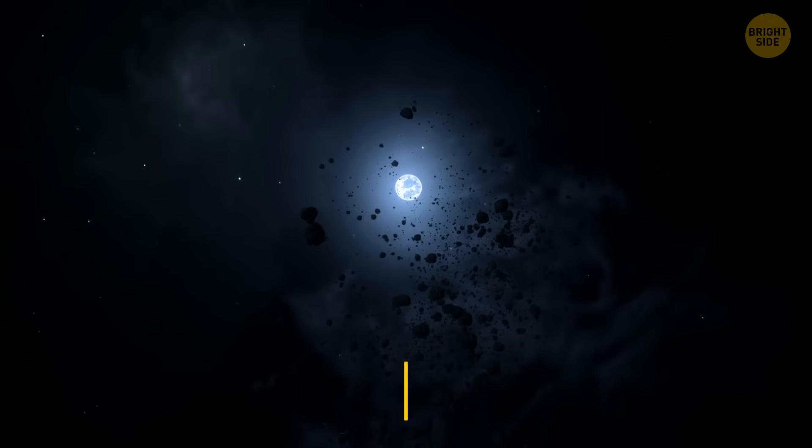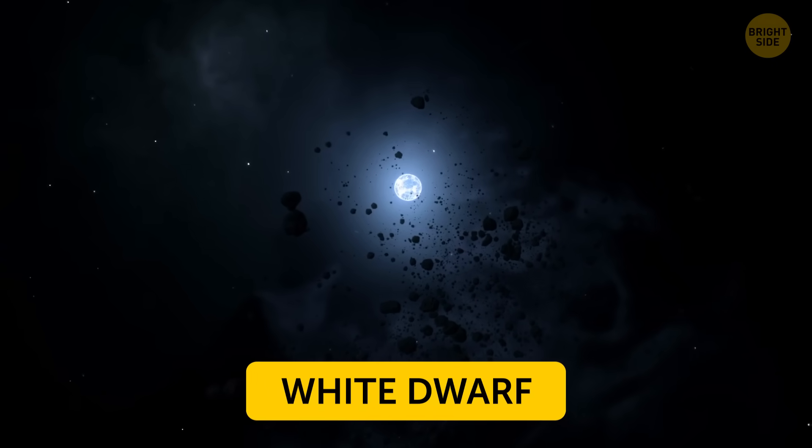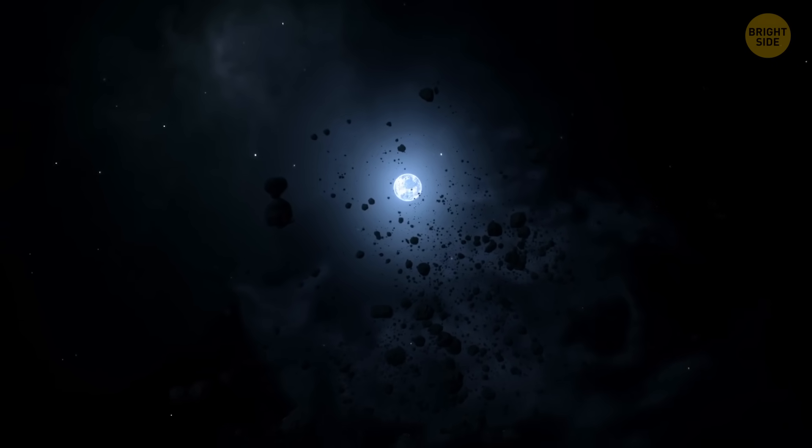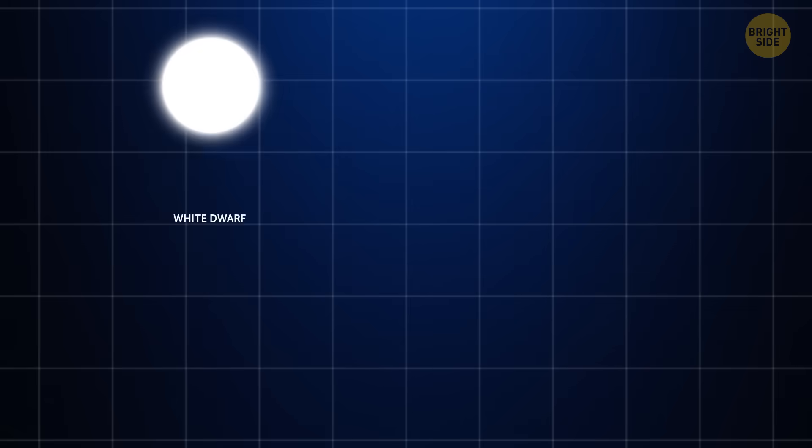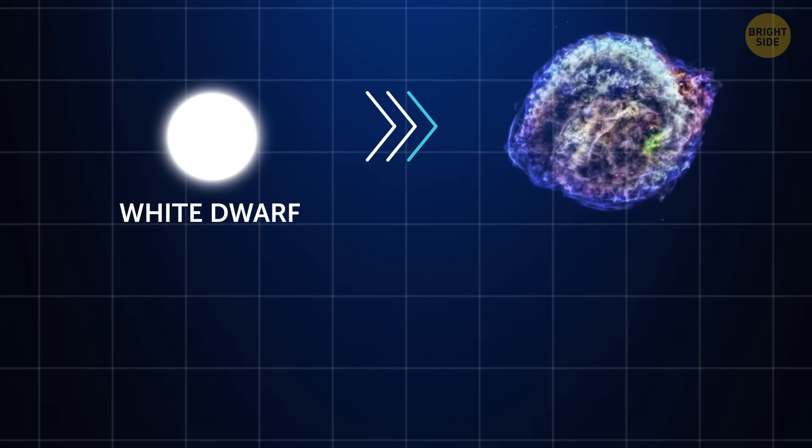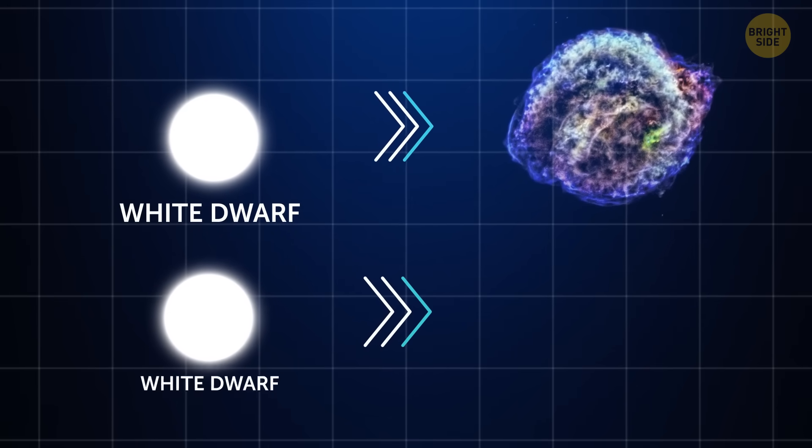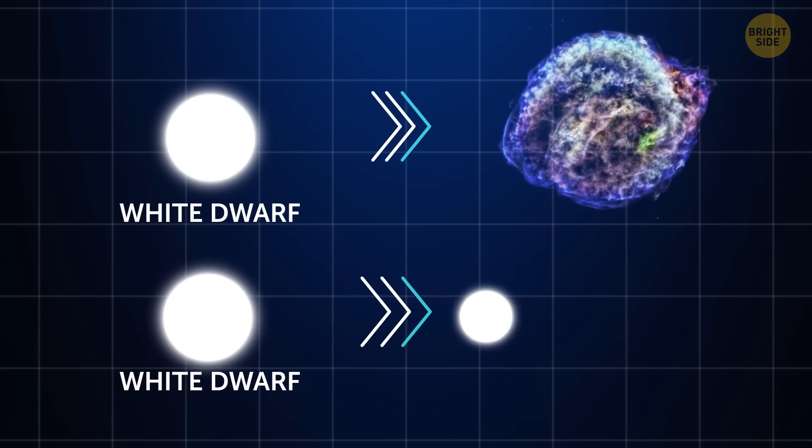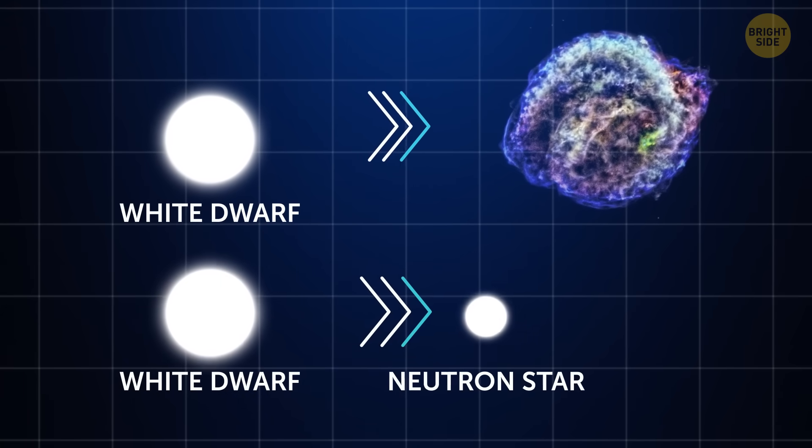One explanation is that it came from a white dwarf, which is the leftover core of a smaller star like our Sun after it runs out of fuel. Normally, when white dwarfs explode, they're destroyed completely. But in rare situations, instead of blowing apart, a white dwarf might collapse into itself and turn into a neutron star. This neutron star could then become a magnetar.